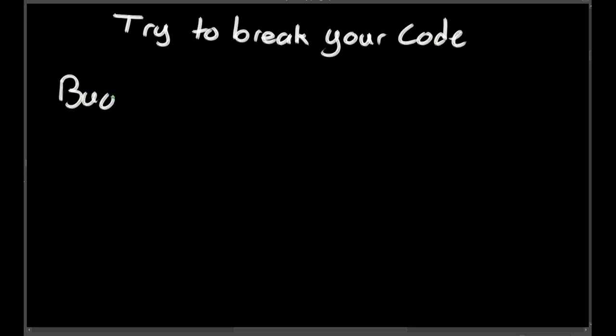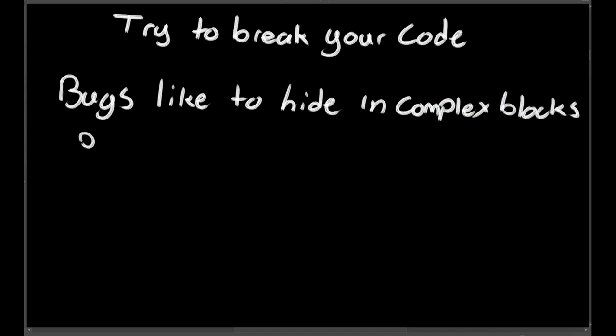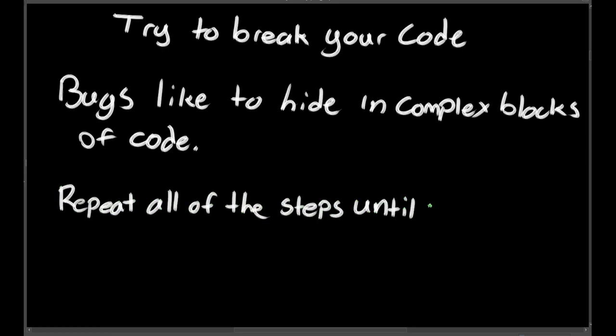If you got your first example working, then it's time to try and break your code. Try to come up with as many weird examples as you can that might cause problems. The more tests you run now, the less likely you are to find bugs in the future. Look at the places you expect to see problems. You'll usually find them where the code is most complicated. Now treat each example just like you did for the first to slowly work out any bugs.